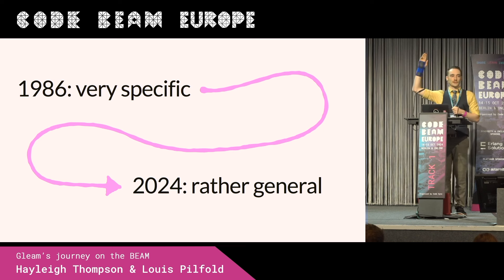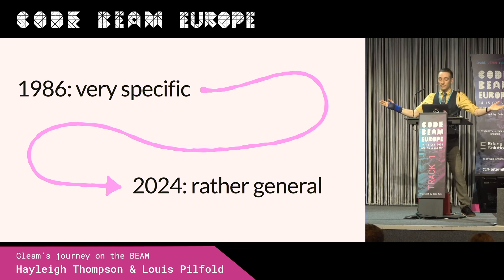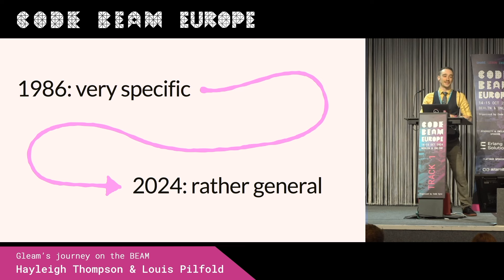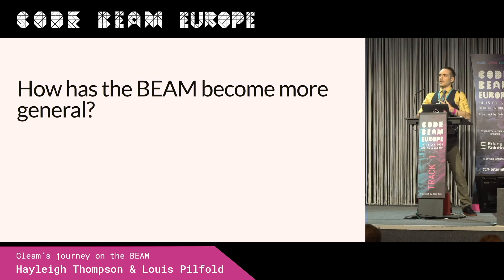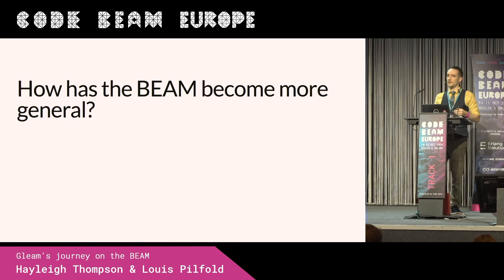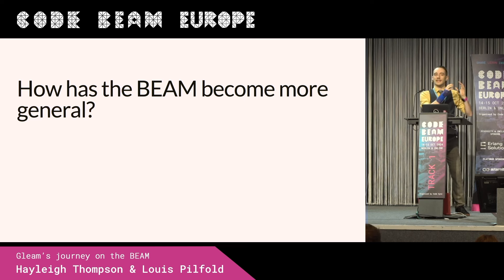So who is using Erlang for telecom software today? A few people, but not the majority — quite a small group. These days, this thing that was very specific has branched out and become really rather general. We've got people using it for web, for ML, embedded systems, and all sorts of different things — even making spaceships explode with Lua. What happened on this long journey that made us go from being extremely focused to being really rather general?